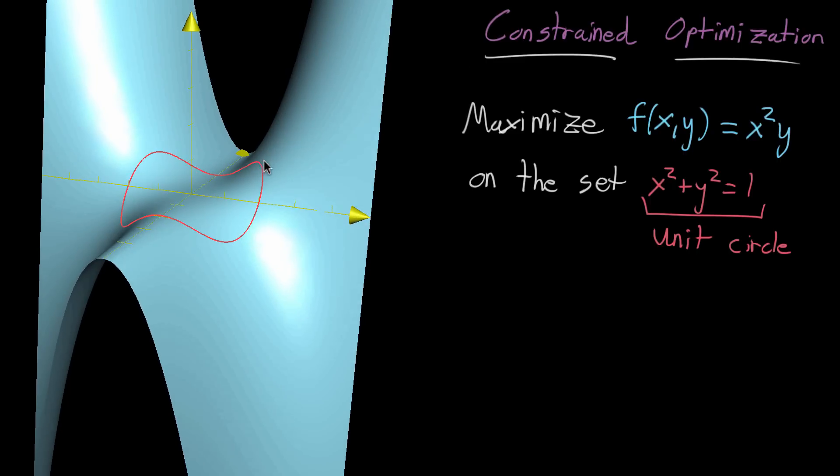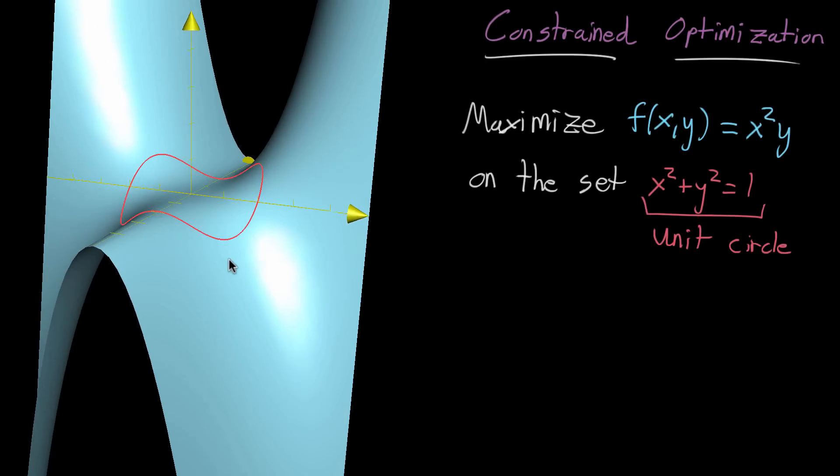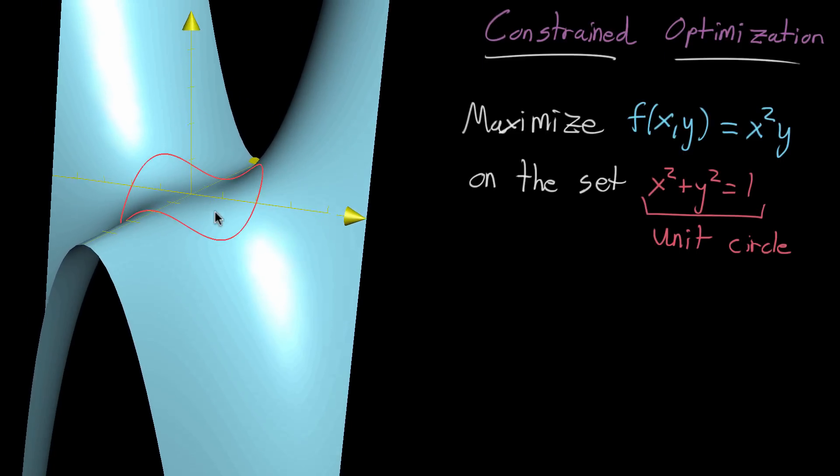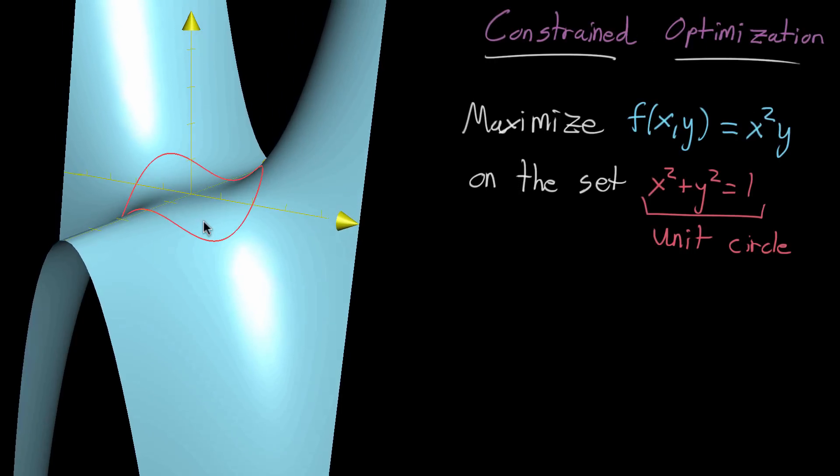And you might notice kind of here, there's sort of a peak on that wiggly circle, and over here there's another one. And then the low points would be around that point, and around over here. Now, this is good, and I think this is a nice way to sort of wrap your head around what this problem is asking.